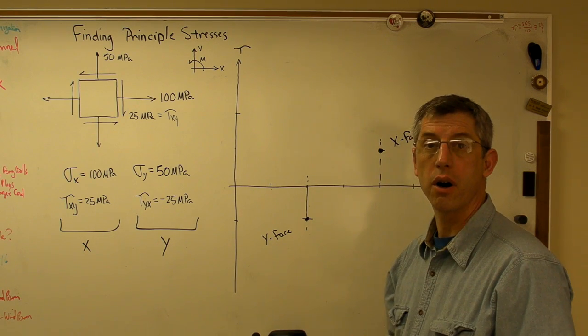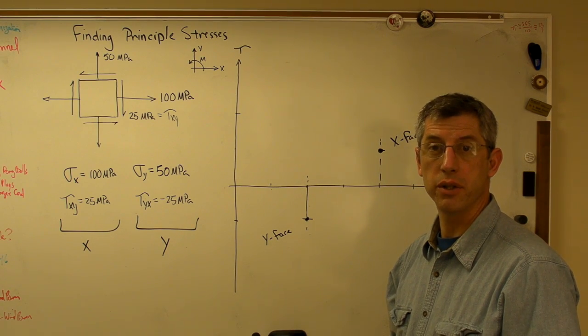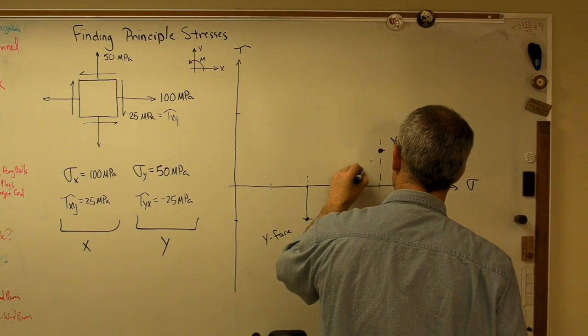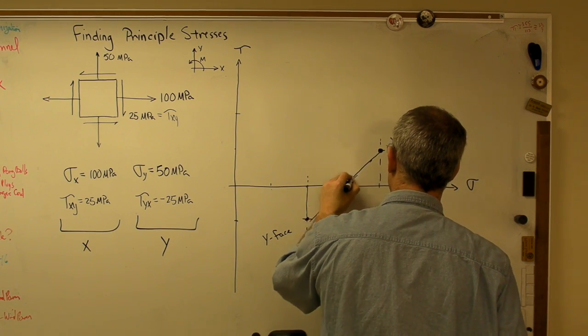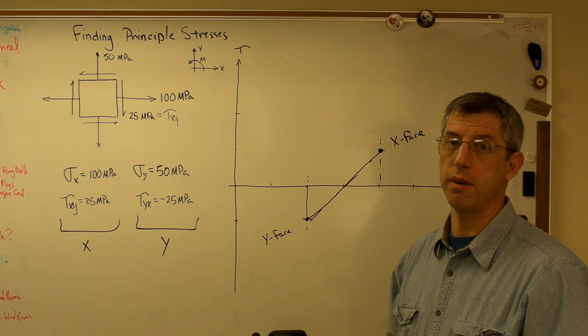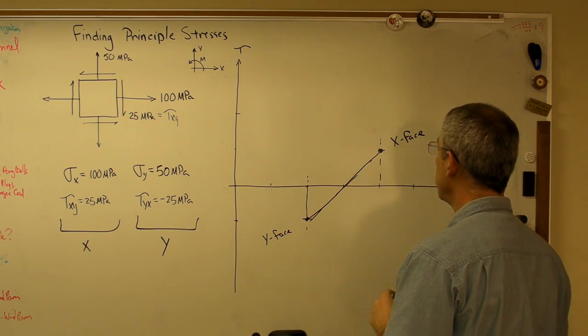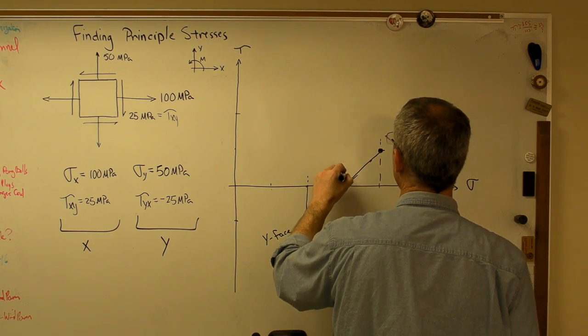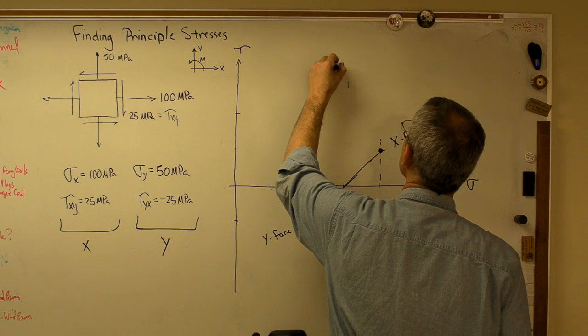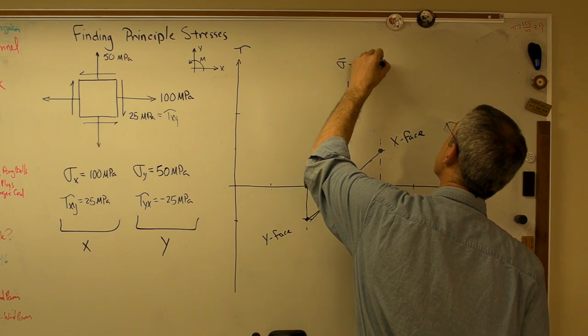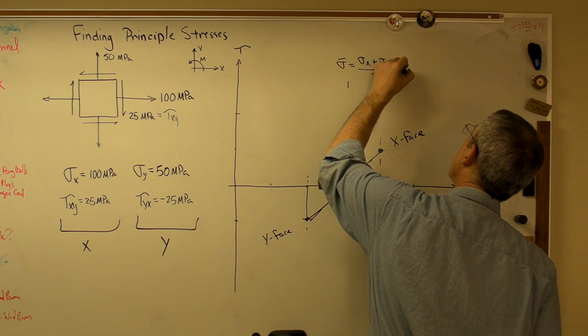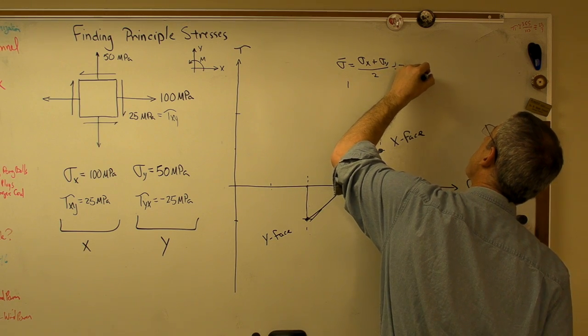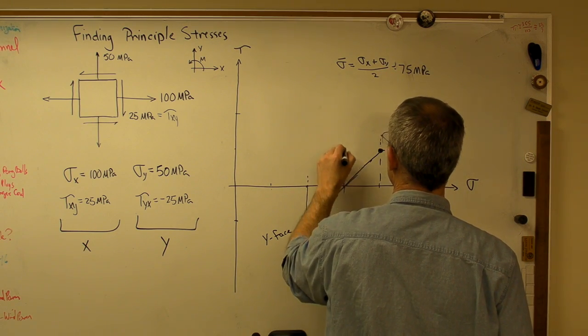Now, I know that these are opposite points on a circle. The line that goes between them is a diameter. It goes through the center. So I'm going to sketch that in there. And I'm sketching here. If this doesn't come out to be a circle, I'm doing my best. So now I know where the center is. Since that is 50 and that's 75, the center is in the middle of that. So sigma bar equals sigma x plus sigma y over 2, and that's 75 megapascals. That's 75.